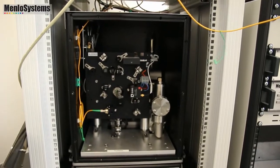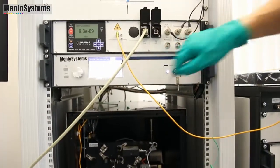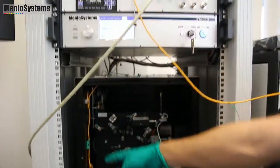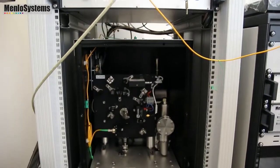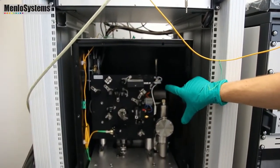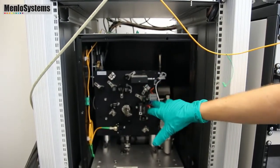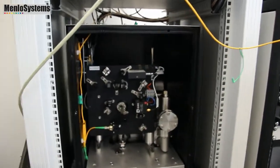Then the laser sits in here. It's a Rio Planex laser which we couple to the cavity via this fiber and then here you got all the optics to generate the PDH error signal. So you got an EOM, photodiode and just some polarization optics.